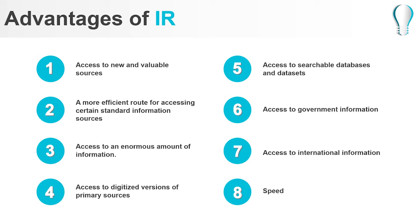Sixth, access to searchable databases and datasets. There are many sites on the internet where you can search a collection of statistical data such as demographic or social science data. While some databases on the internet are fee-based, some others are free. Seventh, access to international information. Not only can you easily find official data from other countries by connecting to embassies, consulates, and foreign governmental sites, you can also search other countries' newspapers, discuss issues with citizens from around the world on newsgroups, and locate websites established by individuals from other nations.